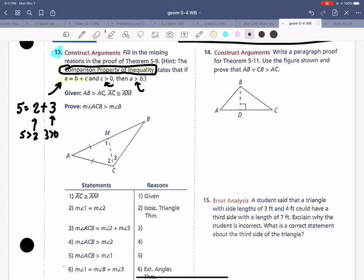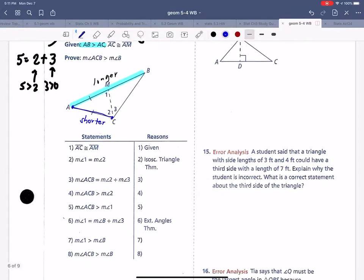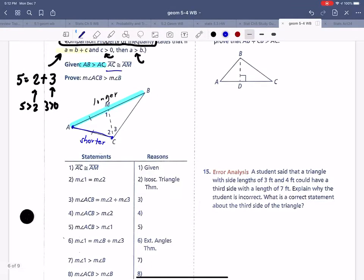Given that AB is longer than AC, so AB is longer than AC. So here's AC, so that one's shorter, and that's given. Also given that AC is congruent to AM, so this is equal. So they started with that, and that's given. Then they said angle 1 is equal to angle 2, that's the isosceles triangle theorem. Two equal sides, two equal angles. If we fold here at the line of symmetry, that would make this angle fold right on top of that one.